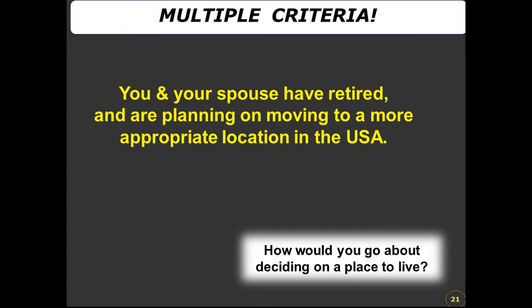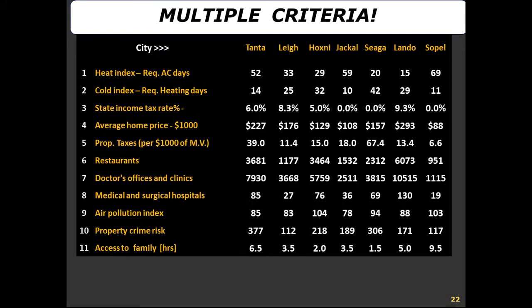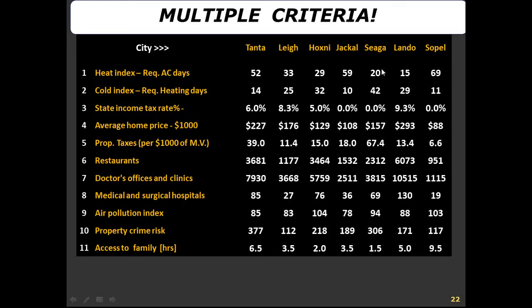Let's consider another multi-criteria problem that many of us face: you need to find a place to retire in tranquility. You would start with a set of criteria — home prices, access to doctors and surgical facilities, pollution, crime and risk, access to family, and so on. I have provided seven cities with factual data from the internet, with names changed so you would not be biased.